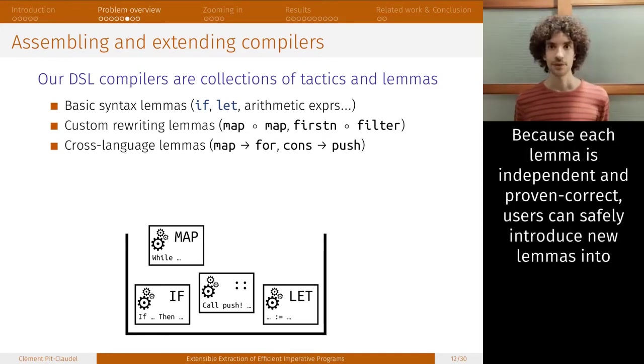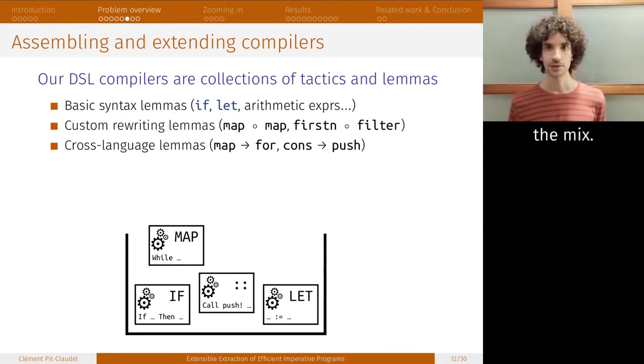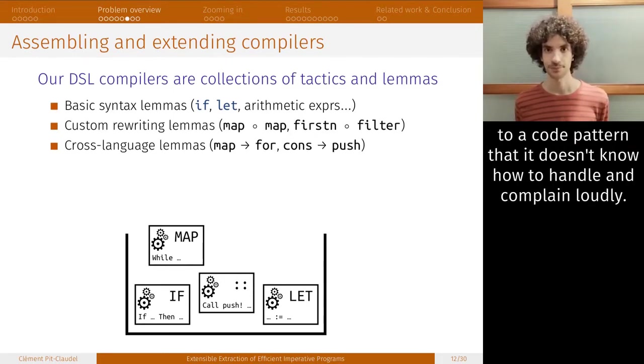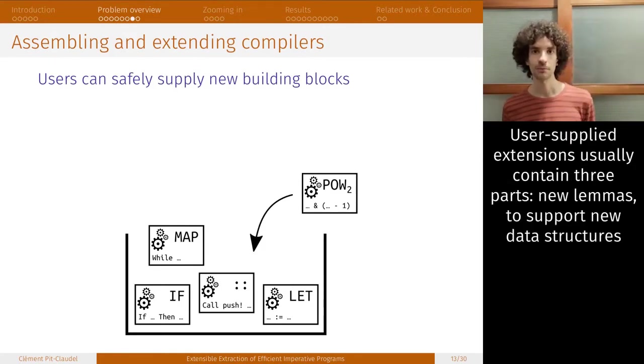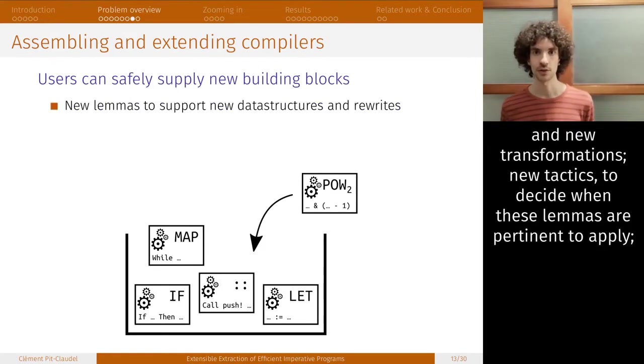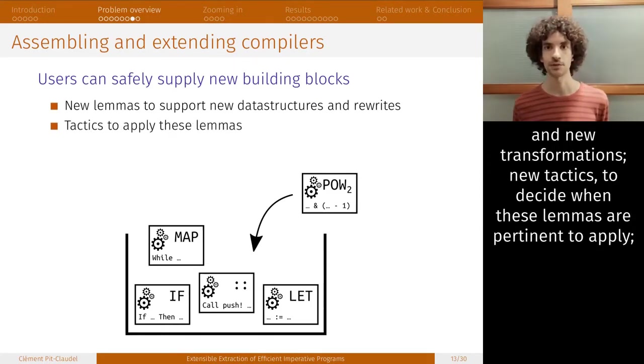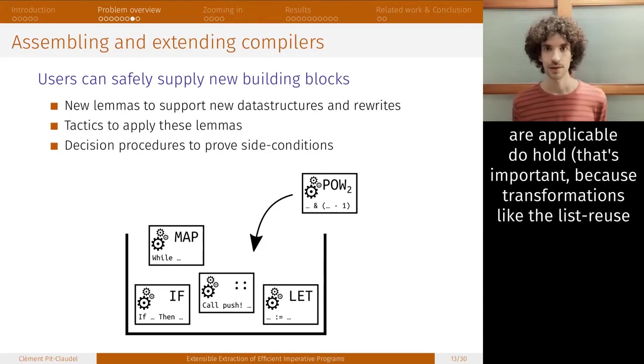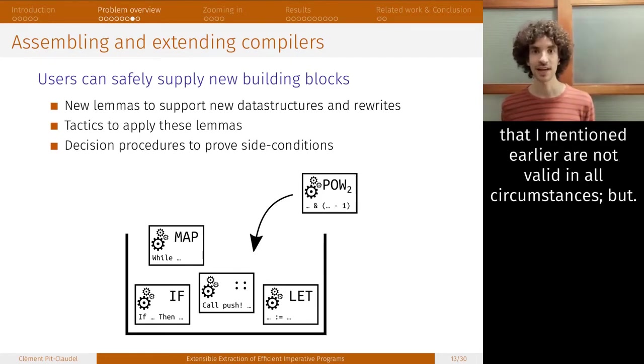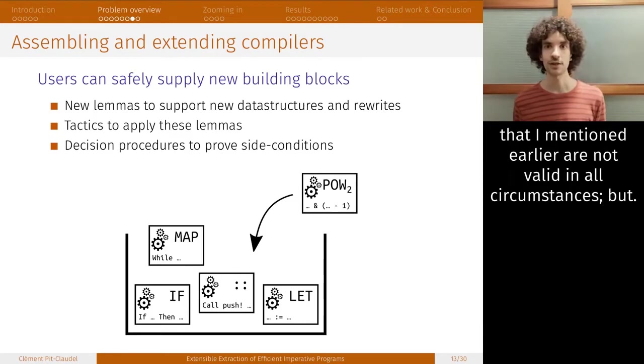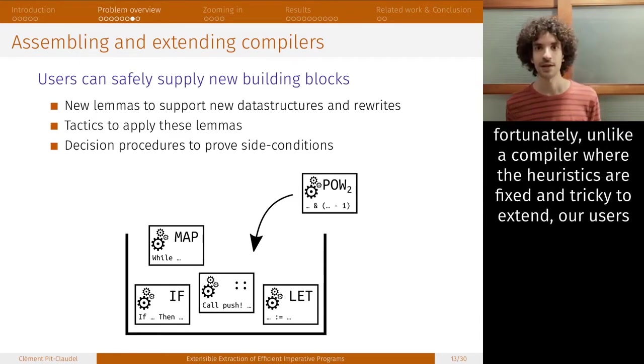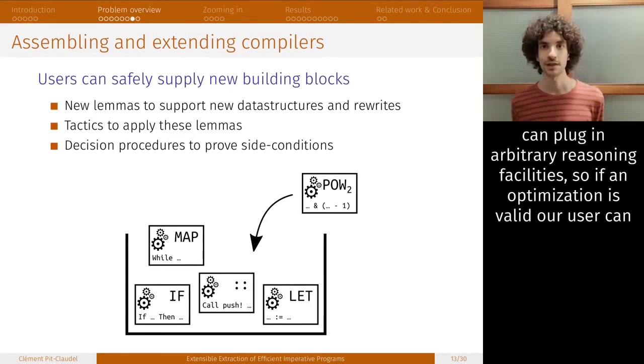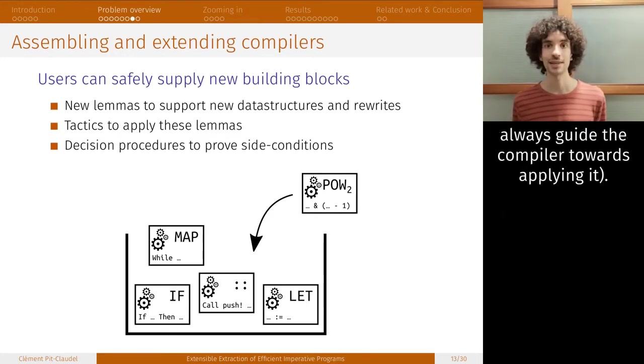Because each lemma is independent and proven correct, users can safely introduce new lemmas into the mix. In the worst case, they'll get suboptimal code, or more likely the compiler will get to a code pattern that it doesn't know how to handle, and it will just complain loudly. Users supplied extensions usually contain three parts. New lemmas, to support new data structures and new transformations. New tactics, to decide when these lemmas are pertinent to apply. And new decision procedures, which confirm that the conditions under which these lemmas are applicable do hold. And that's important, because transformations like the list reuse I mentioned earlier are not valid in all circumstances. In the case of the list, we have to make sure that it would actually never be read from again. But fortunately, unlike a compiler where the heuristics are fixed and tricky to extend, our users can plug in arbitrary reasoning facilities.